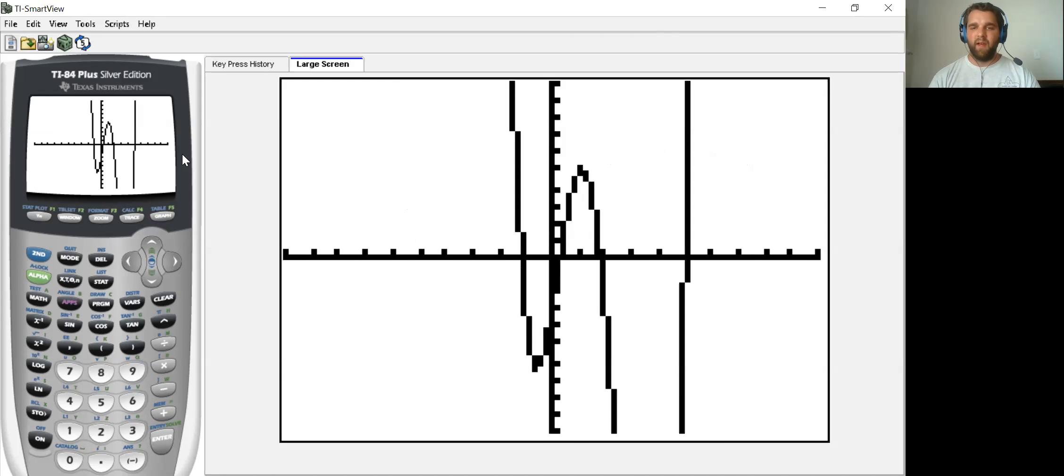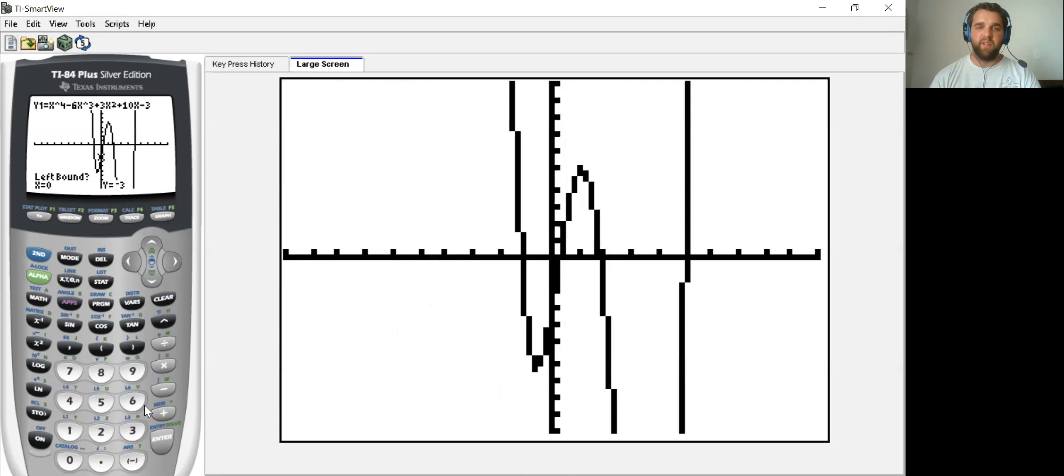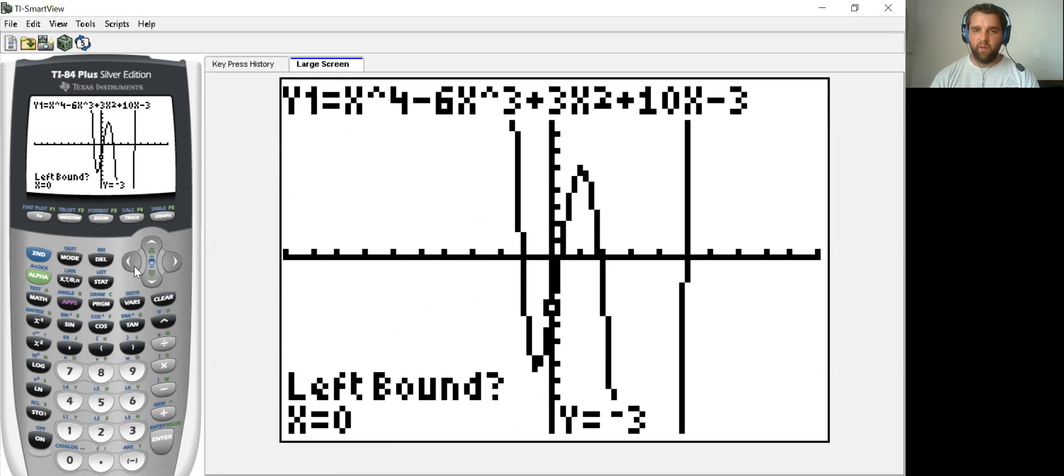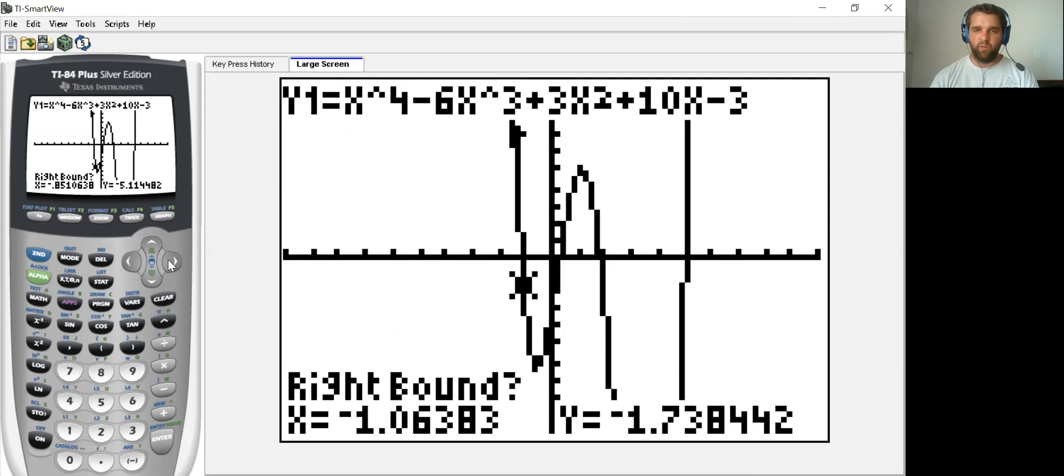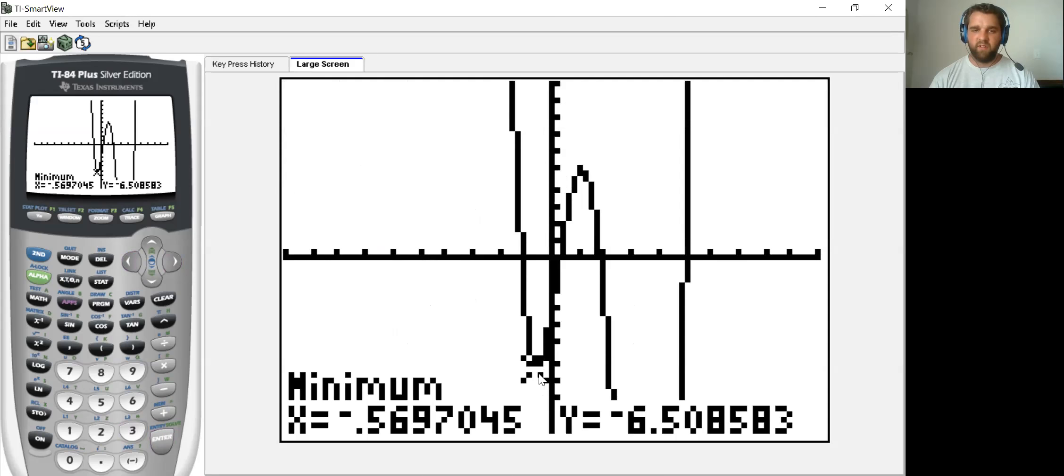And, like last time, I would find those local minimums and maximums by going second calc, and you can either find minimum or maximum. I did maximum before, so let's just do minimum this time. So to find this point, we need to go to the left of that point. And then we would have to go to the right of that point. And then zeroes in on that point, which is at about negative a half. So that's another way that you can try to find those points specifically, so that if I do ask you to name what those minimums or maximum points are, you can do that using your calculator.